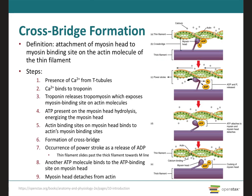Now let's discuss cross-bridge formation, which is when the myosin head binds to the actin molecules. The myosin head has two binding sites: an actin binding site and an ATP binding site. When the actin binding site of the myosin head binds with the actin molecule, it creates the cross-bridge. For this to occur, the first thing needed is the presence of calcium, which comes from the T-tubules. Once calcium binds to troponin, it allows the tropomyosin to change its conformation and release the myosin binding sites on the actin molecule.